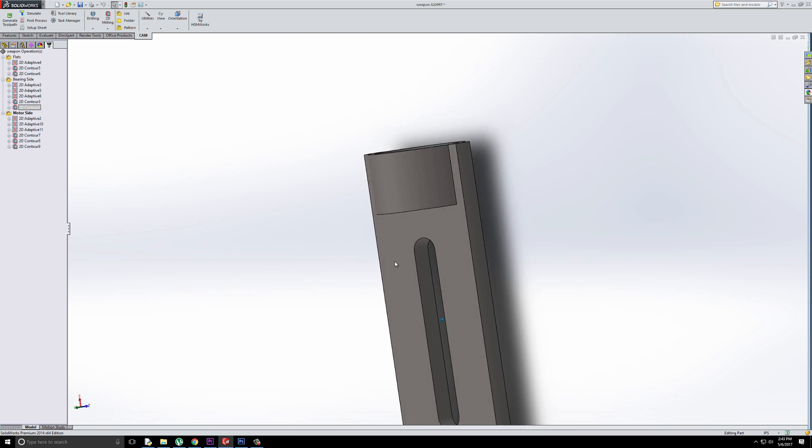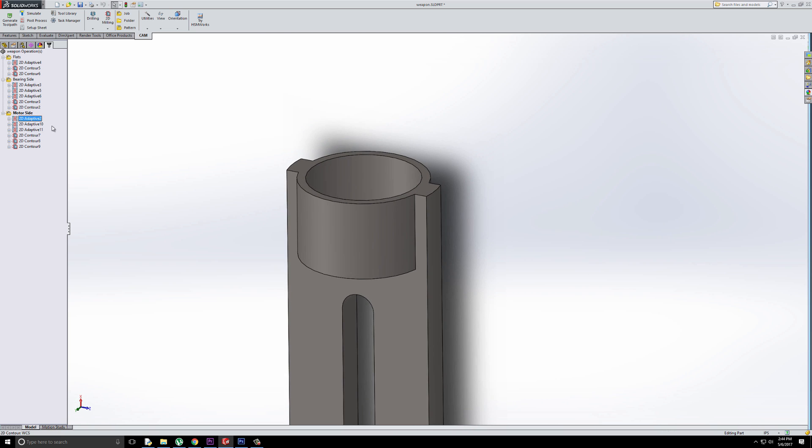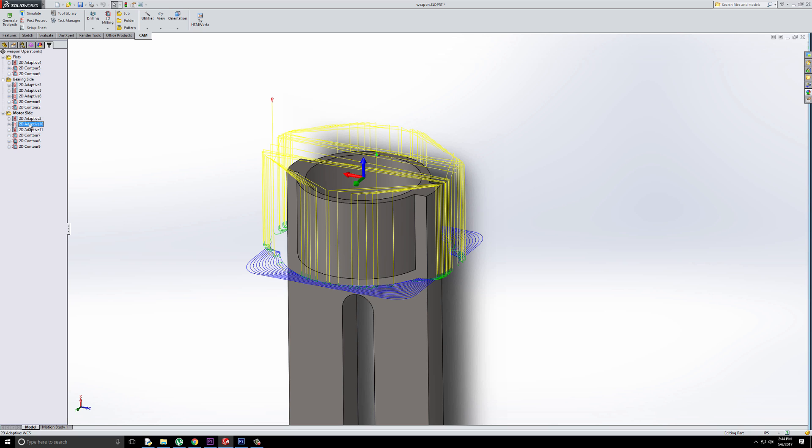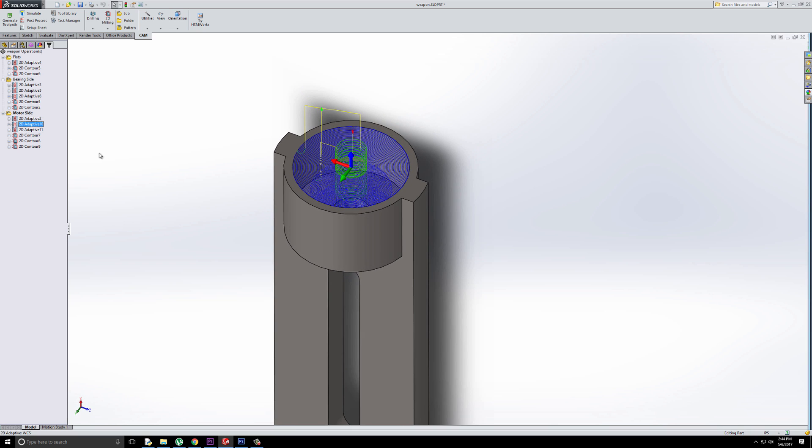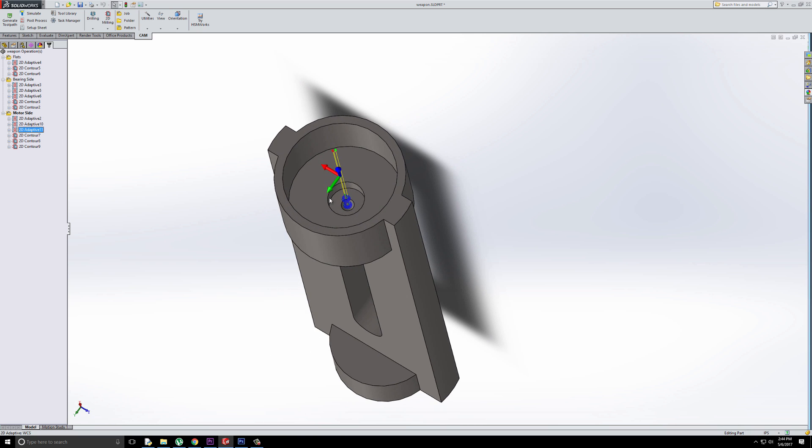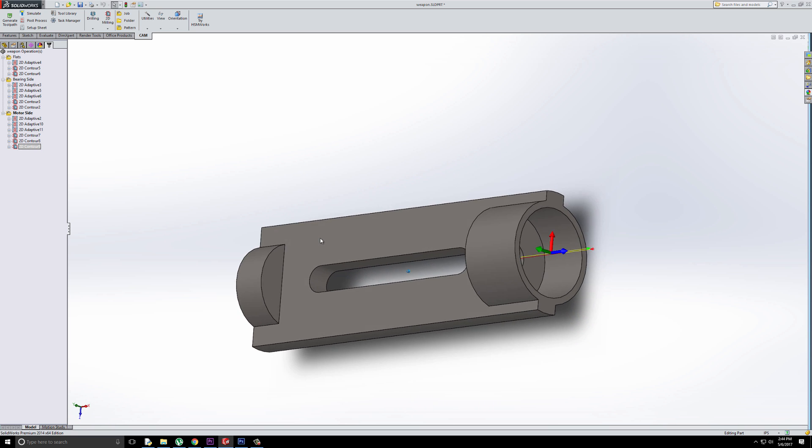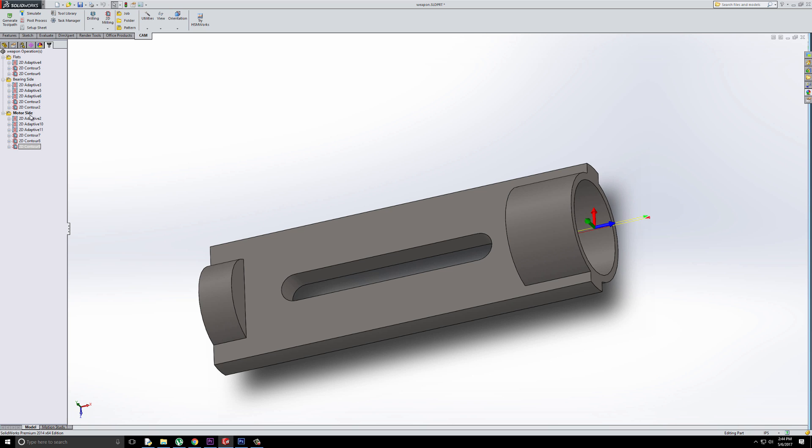And then on the other side that's pretty similar, try to do an adaptive for the outside, adaptive for this inside, another adaptive, this is just for the motor shaft and everything that sticks out. And then once again just contours to clean everything up. I'm not going to go into a lot of details on all the settings here. I'll talk about this when I'm actually showing the machining.